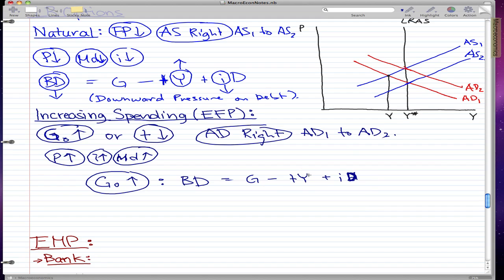The budget deficit is G minus TY plus ID. So we know that our interest increased. And of course, we fixed the recessionary gap. So our Y also increased. And we know that government increased their spending. So their G increased. And we know that when G increases and Y increases, the effects on the budget deficit is uncertain.